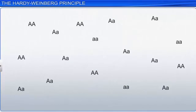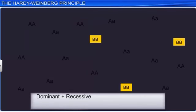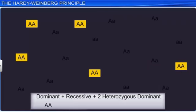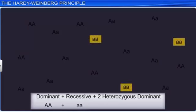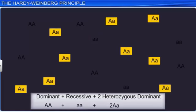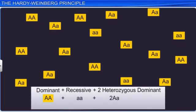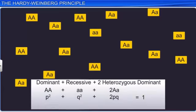The sum of all these frequencies is dominant plus recessive plus two heterozygous dominant, which can also be expressed as capital A capital A, plus small a small a, plus two times capital A small a. On substituting capital A with p and small a with q, we get p square plus q square plus 2pq. Therefore, we get the equation p square plus 2pq plus q square equals 1, which is in fact the binomial expansion of the whole square of (p + q).